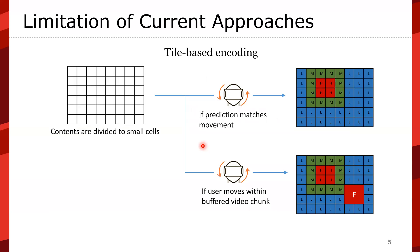Let's look at tile-based encoding. You basically divide the equirectangular content into small cells and provide higher quality where users are currently looking. If the prediction matches, users can experience higher quality. However, if users move within the pre-fetched video chunk, they experience low quality of experience, because perfect prediction is not possible.